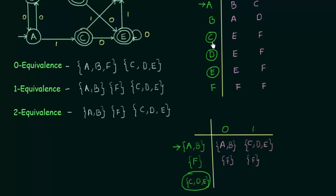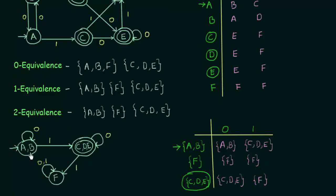For CDE, checking with C: on input zero it goes to E, and the state containing E is CDE. On input one it goes to F, and F is F itself. In the original DFA, C, D and E were all final states, so CDE is the final state here. Here I have the minimized version of the given DFA. In the original we had 6 states, but in the minimized one we have only 3 states, and the working is exactly the same. The state transition diagram shows AB as the initial state, CDE as the final state, and F as another state with the transitions on inputs 0 and 1. I hope it was clear. Thank you for watching.